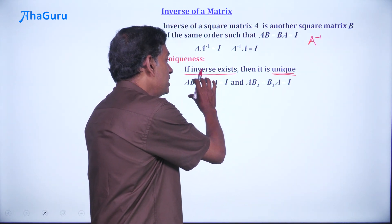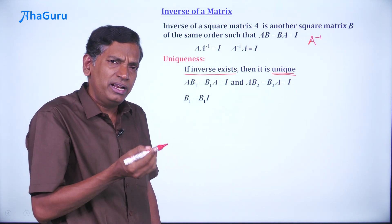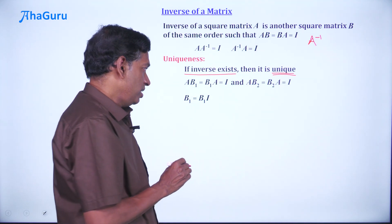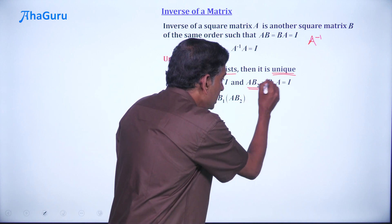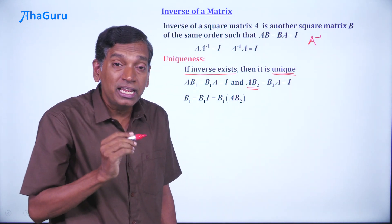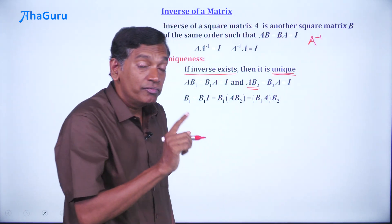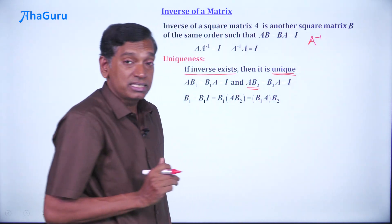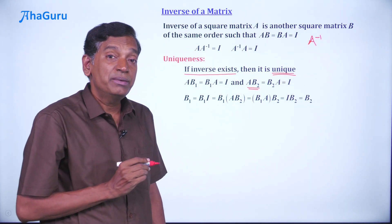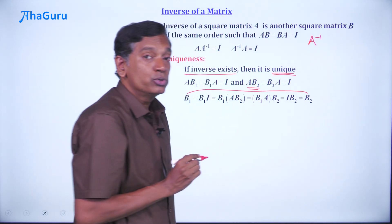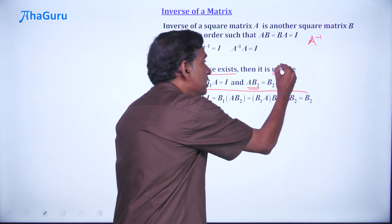How? If those two statements are true, then we can write B1 as B1 times identity, because any matrix equals itself times the identity of appropriate order. But I can be split as AB2, because by definition of inverse AB2 equals I. Using associativity, we can change the brackets to write this as B1A times B2. But B1A is nothing but identity. Therefore, we get IB2, which is simply B2. That means B1 equals B2 — inverse is unique.